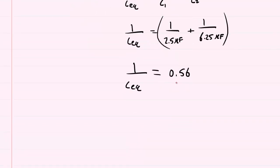Then to continue solving, what I like to do is put a little 1 underneath the 0.56, and then cross-multiply. So I'll have 1 times 1, which gives me 1. And then I'll go the other way too. 0.56 times the CEQ will be 0.56 CEQ.